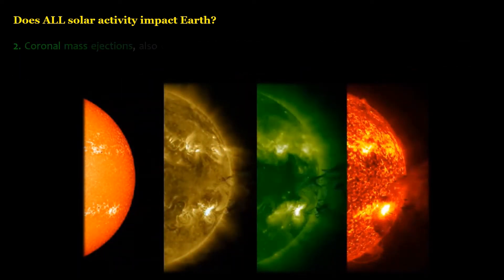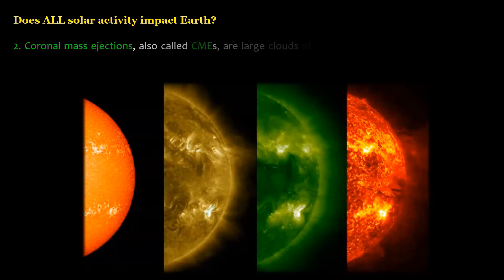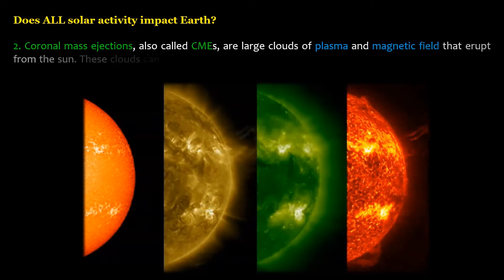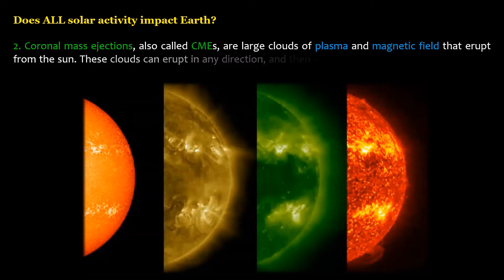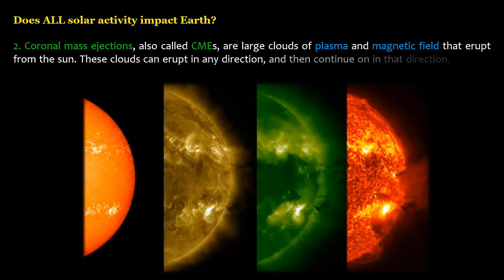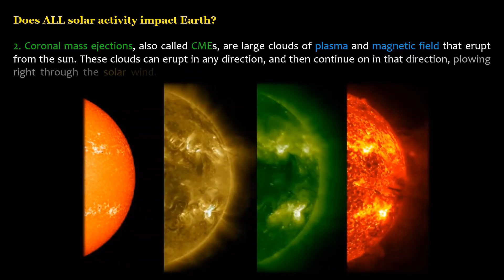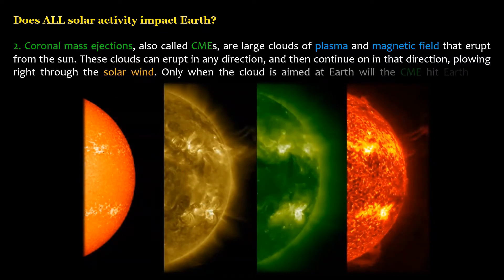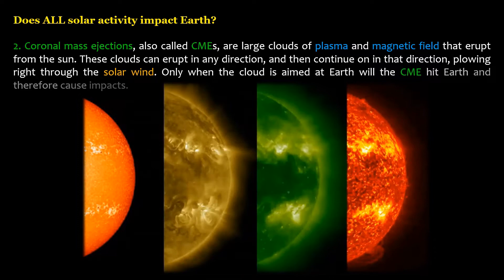Coronal mass ejections, also called CMEs, are large clouds of plasma and magnetic field that erupt from the sun. These clouds can erupt in any direction, and then continue on in that direction, plowing right through the solar wind. Only when the cloud is aimed at Earth will the CME hit Earth and therefore cause impacts.